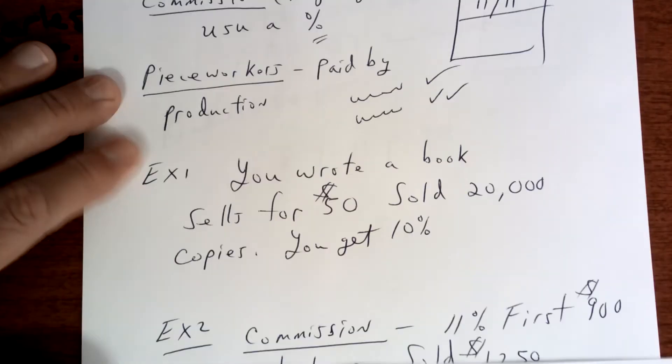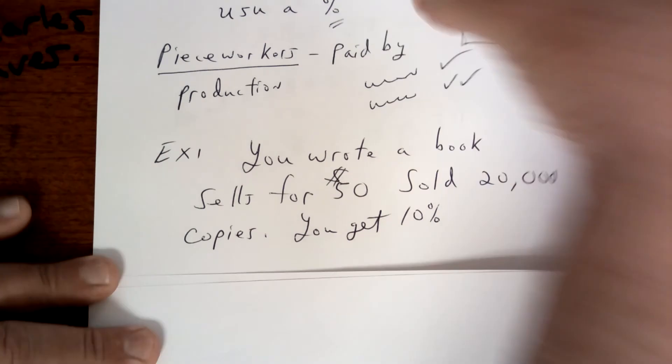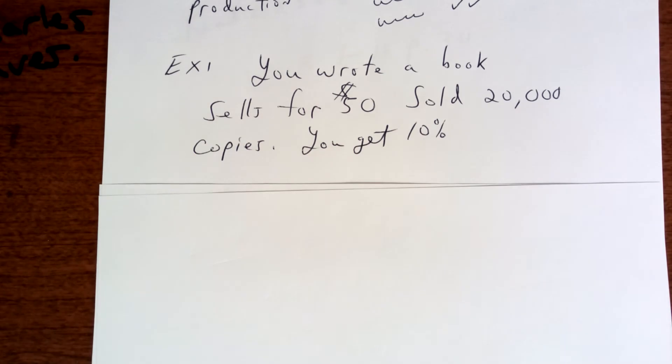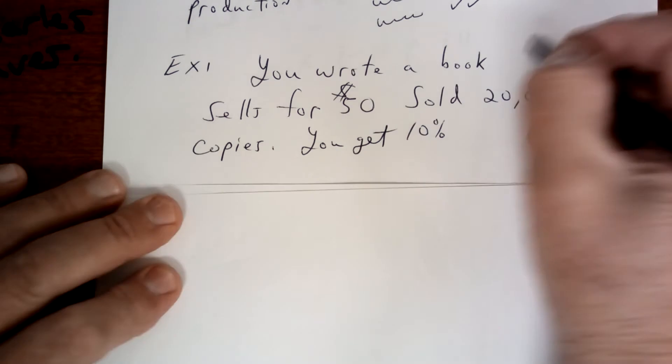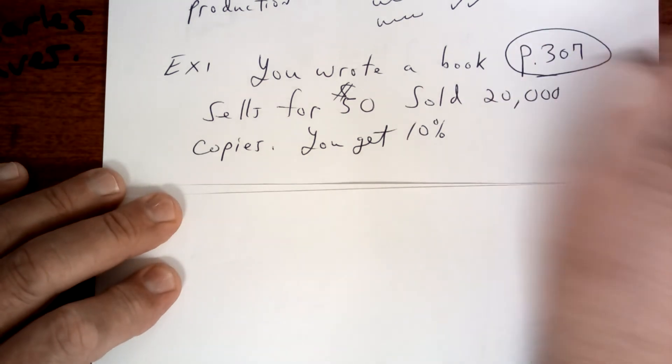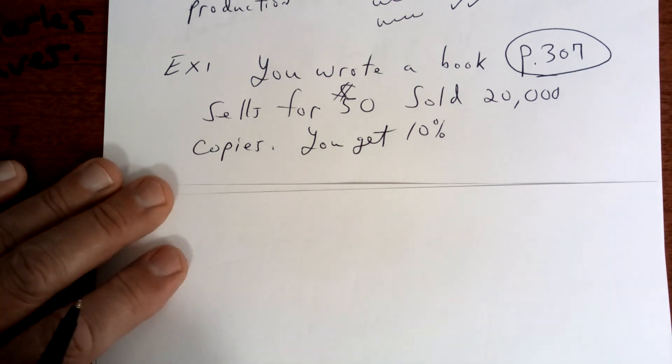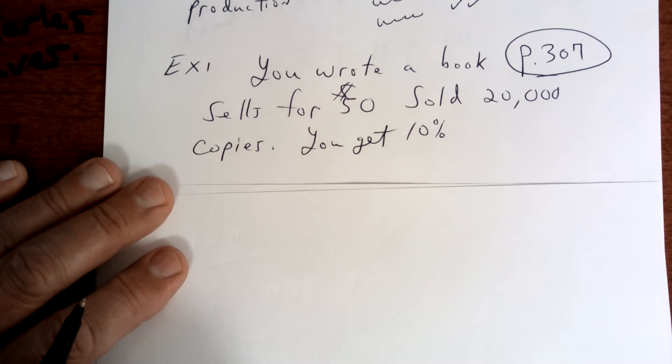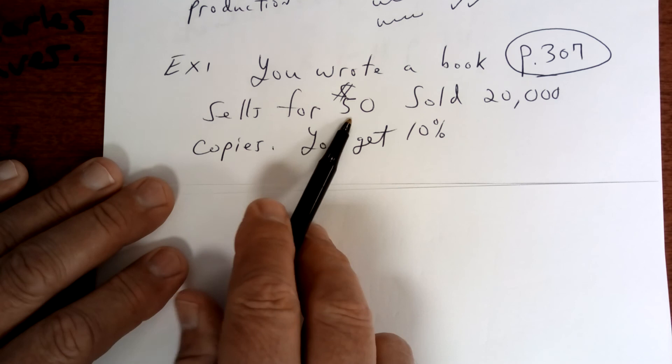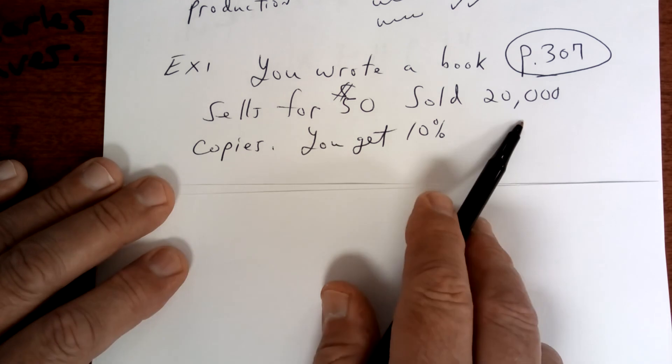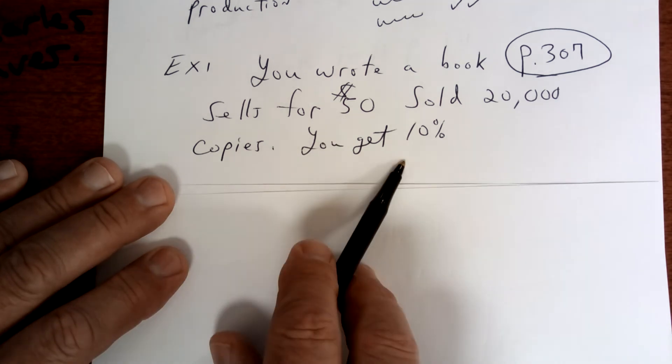Want a new sheet of paper? Copy this down. I want you to turn to example 1 and the numbers I changed to make them a little easier. So page 307. Open your book. You wrote a book like the guy who wrote this book. It sells for $50 a copy. I rounded it off to make it easy. And you sold 20,000 copies. You get 10% of what you sell.